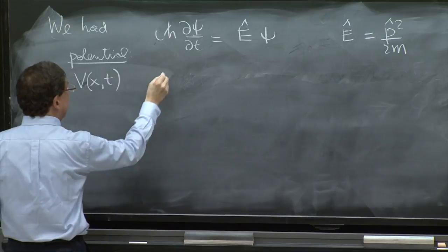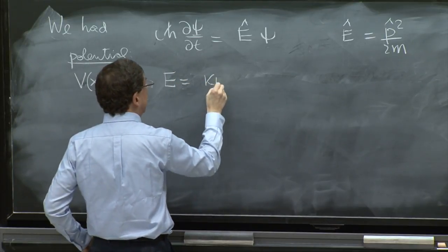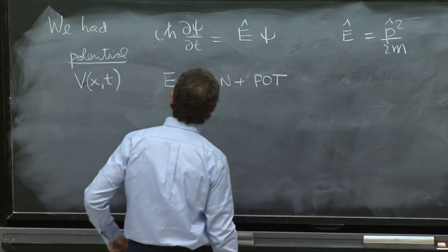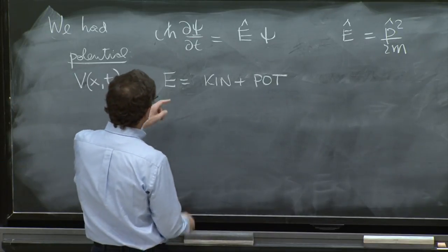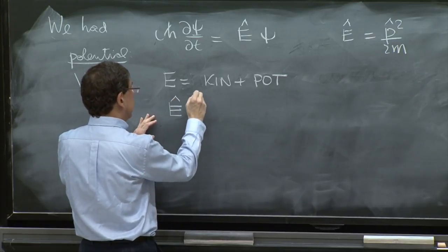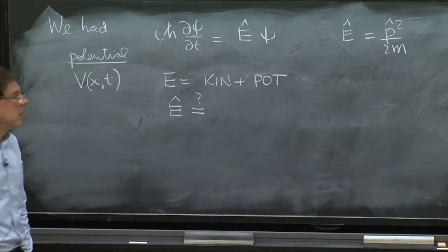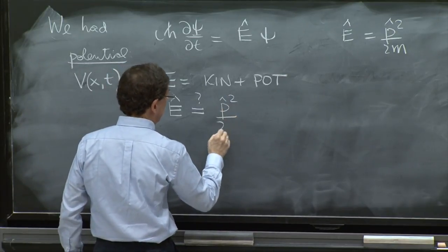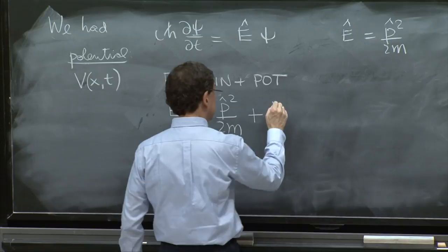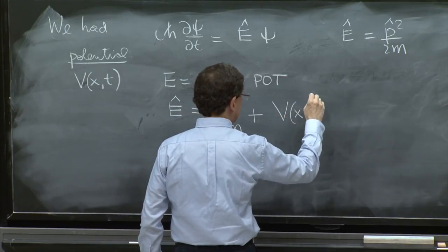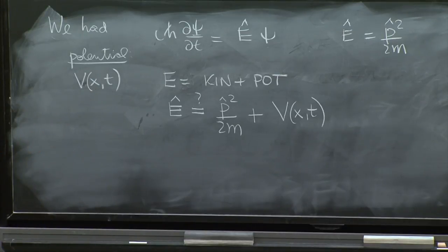Then the total energy is kinetic energy plus potential energy. So how about if we think of the total energy operator? And here is a guess. We'll put just p squared over 2m, what we had before. That's the kinetic energy of a particle. But now add plus v of x and t, the potential. That is reasonable from your classical intuition. The total energy is the sum of them. But this is going to change the Schrödinger equation quite substantially.